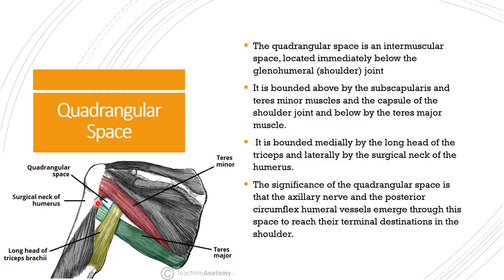To repeat: the quadrangular space is bounded above by teres minor, below by teres major, medially by the long head of the triceps, and laterally by the surgical neck of the humerus. Its two contents are the axillary nerve and the posterior circumflex humeral vessels.